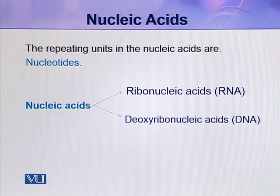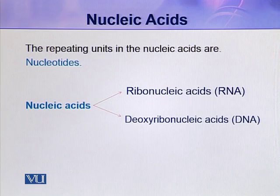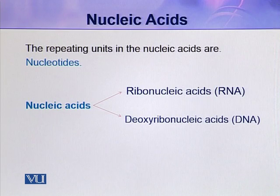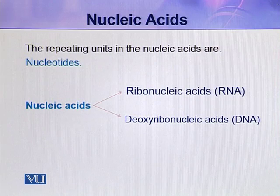Deoxyribonucleic acid, DNA, is only of one type. There are no other types of DNA, and DNA is mainly present in the nucleus, in addition to chloroplasts and mitochondria. The sequence of amino acids in a protein molecule depends on the nucleotide sequence in the DNA molecule, so the DNA molecule describes the amino acid sequence of a protein.